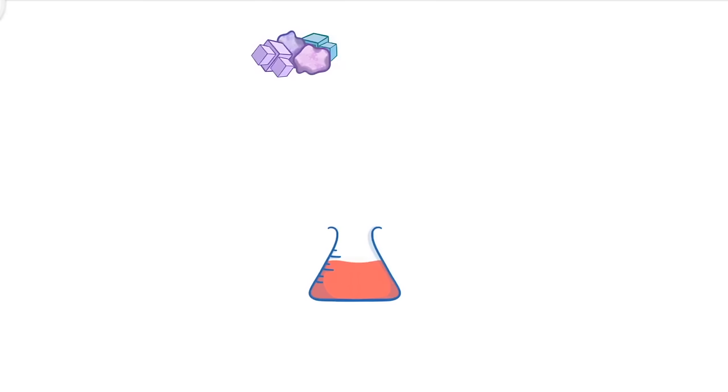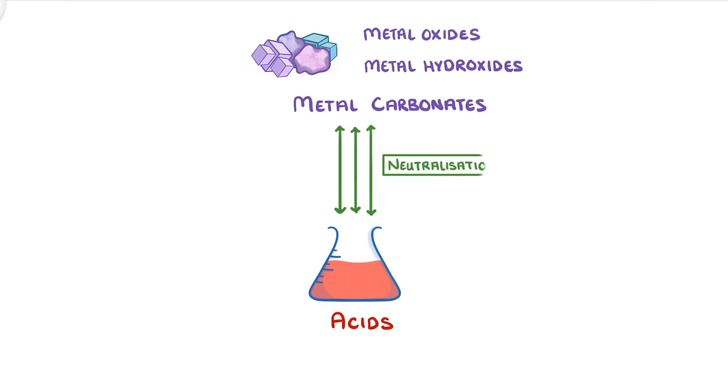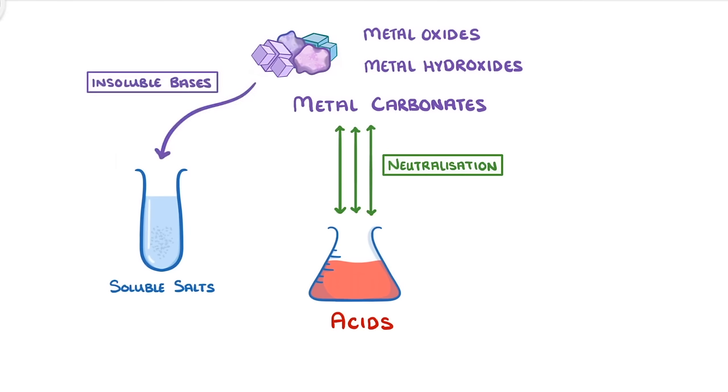In today's video, we're going to look at the reactions between acids and different kinds of bases, including metal oxides, metal hydroxides, and metal carbonates, all of which would be classed as neutralization reactions. And at the end, we'll see how we can make soluble salts using an insoluble base.